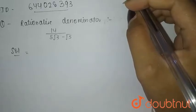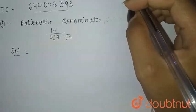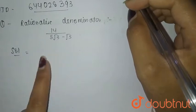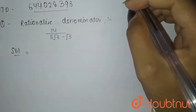Hello everyone. The given question is to rationalize the denominator, that is 14 by 5 root 3 minus root 5.